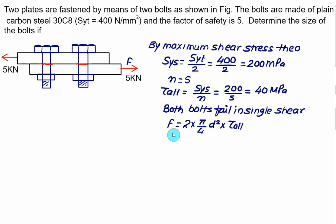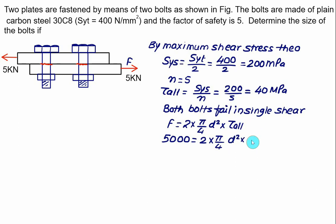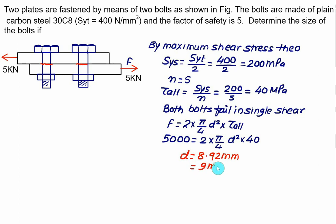With F = 5 kN (5000 N): 5000 = 2 × (pi/4) × D² × 40. Solving, the diameter D ≈ 8.92 mm, which is very close to 9 mm.